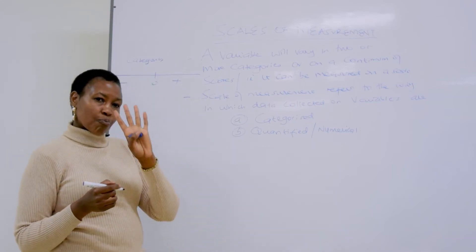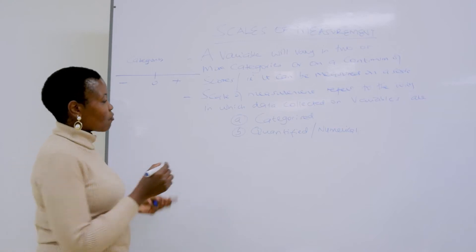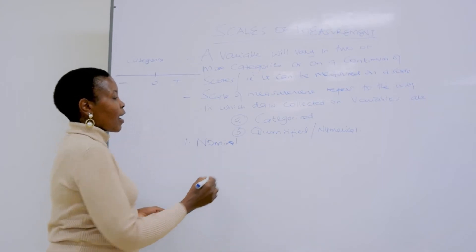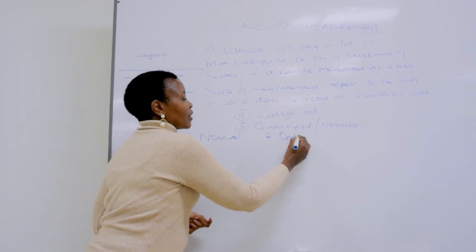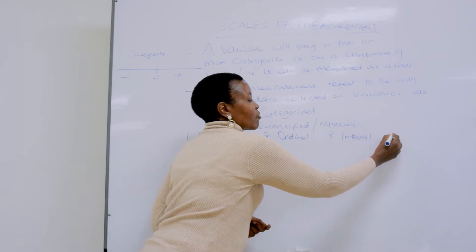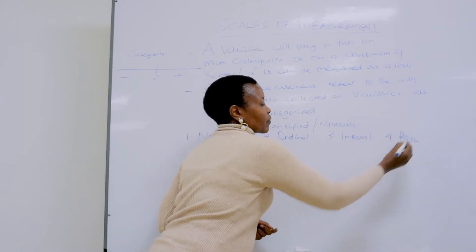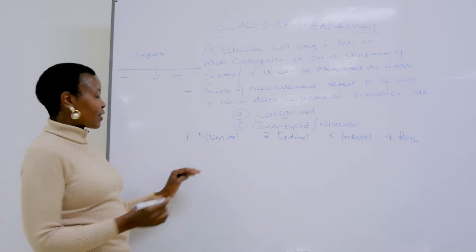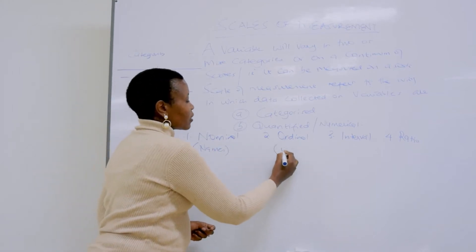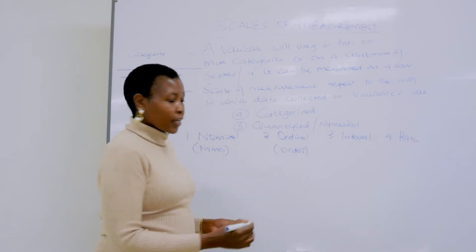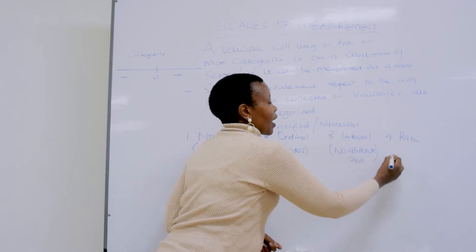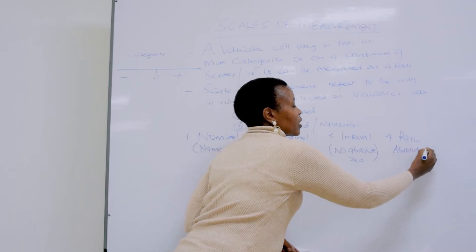There are four levels, or four scales, of measurement. The first is called nominal, and this is the lowest. The second is called ordinal, and this is the sub-order. The third is called interval, and the fourth is called ratio. The simplest way to remember: nominal names, ordinal orders, interval has no absolute zero, and ratio has an absolute zero.